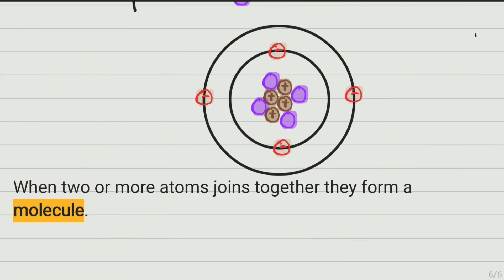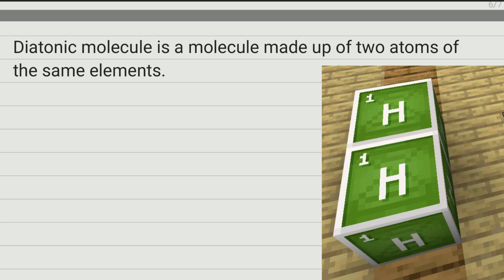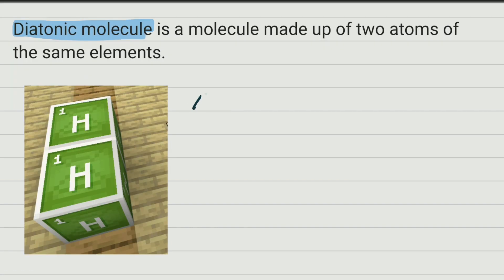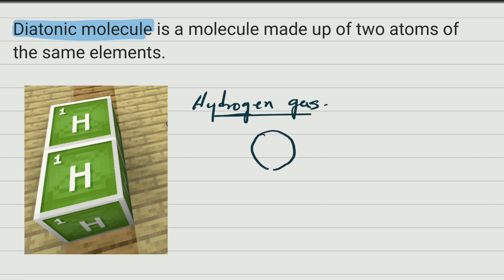You saw how molecules work. If two atoms of the same element combine, a diatomic molecule forms. Let's write this down: a diatomic molecule is when two atoms of the same element combine. The example is hydrogen gas, which you saw in the video just now. In your book you don't draw squares — you draw circles. So when I draw two atoms of hydrogen using circles, this is hydrogen gas, which is the same diatomic molecule.